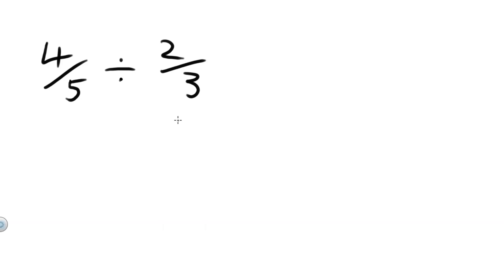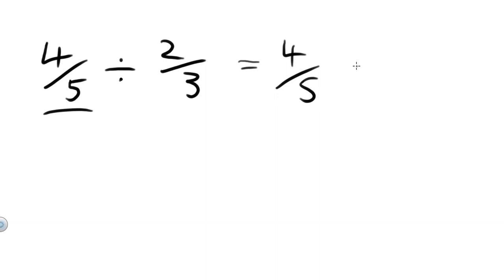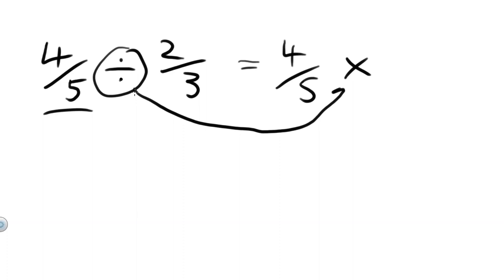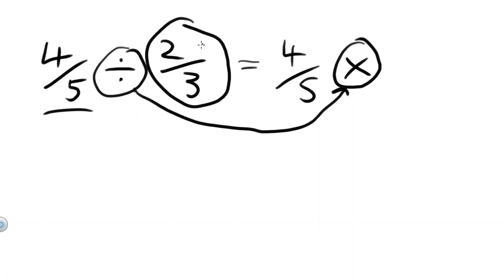Well, the easiest way to do that, in my opinion, is instead of dividing by 2 over 3, we multiply by 3 over 2. So we multiply by the reciprocal of the second term. We keep the first term, 4 fifths, that stays the same. We change the division to a multiplication instead. And then we have to find the reciprocal of that term — all that means is that we turn that upside down. So we multiply by 3 over 2.